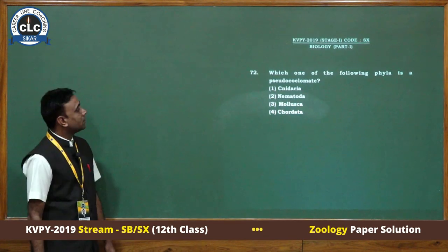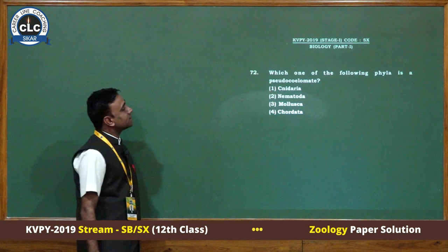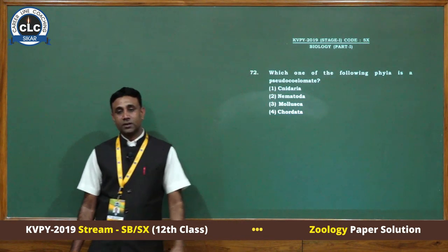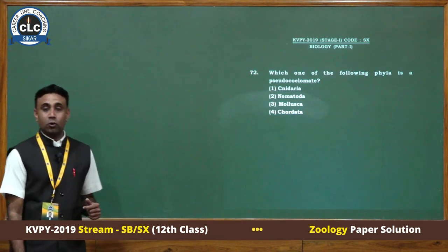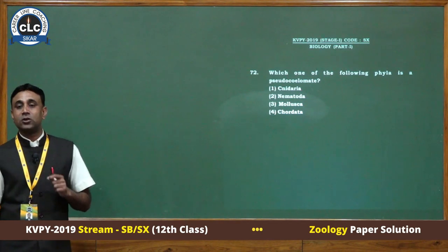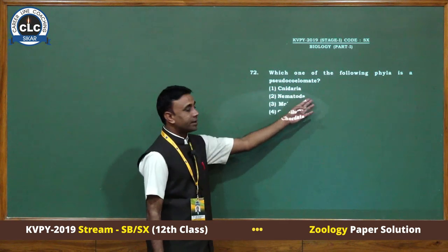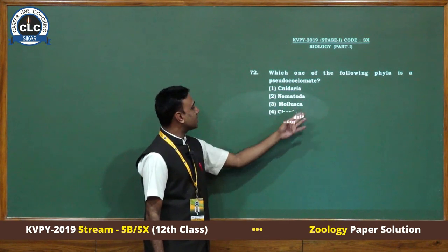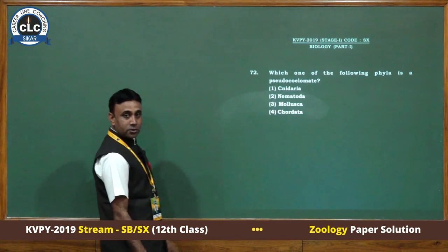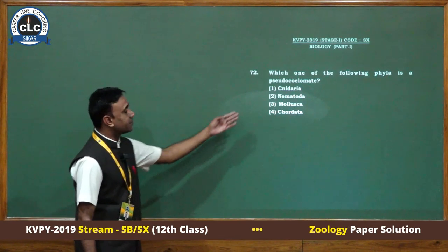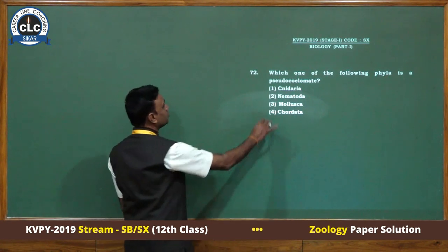Next question, which of the following phyla is a pseudocoelomate? There are three kinds: acoelomate, pseudocoelomate, and coelomate. Cnideria is acoelomate, Nematoda is pseudocoelomate, and Mollusca and Chordata are eucoelomate. The answer is Nematoda.